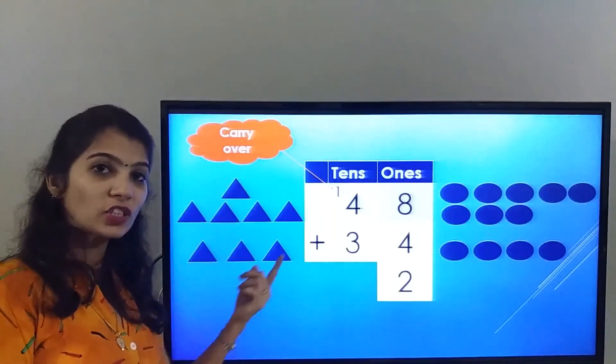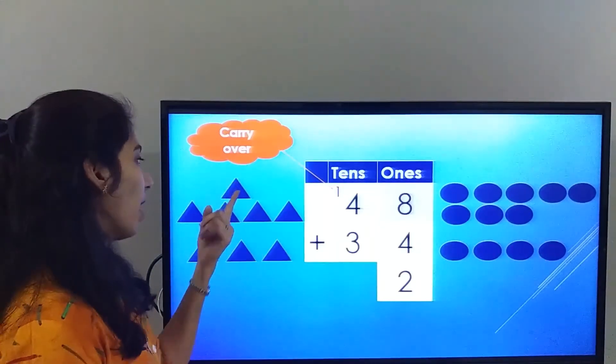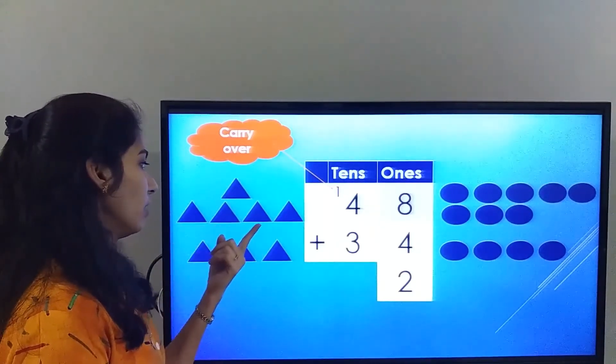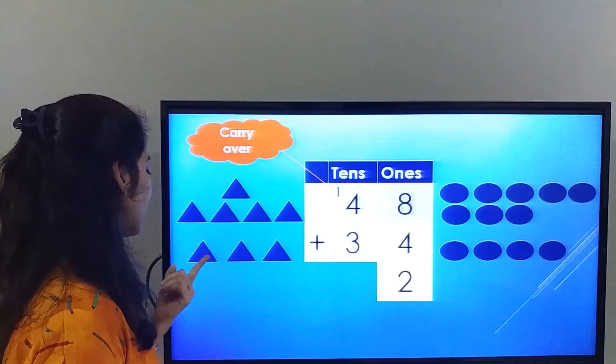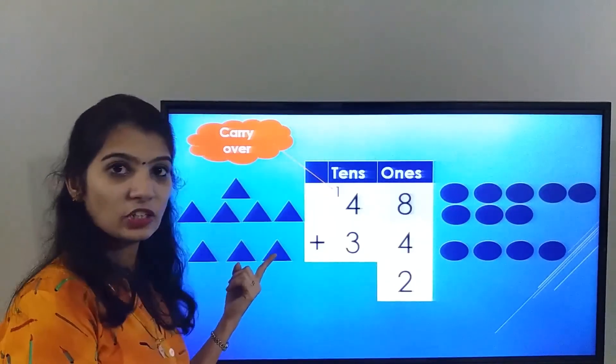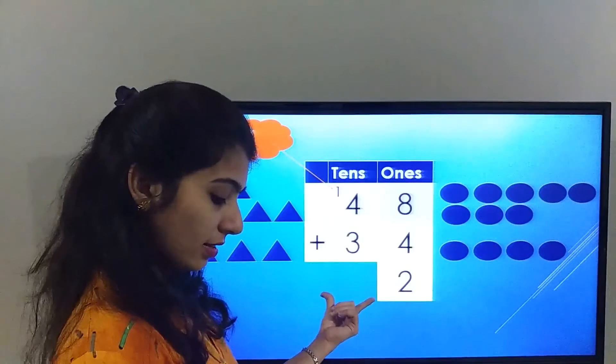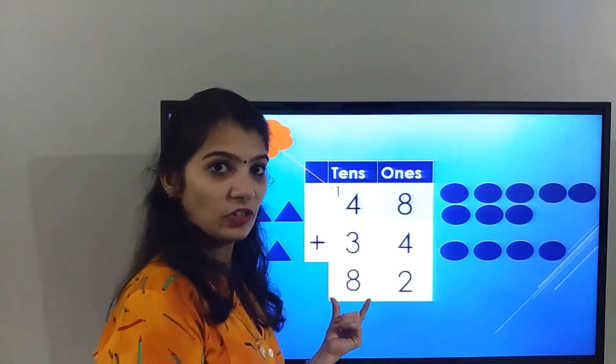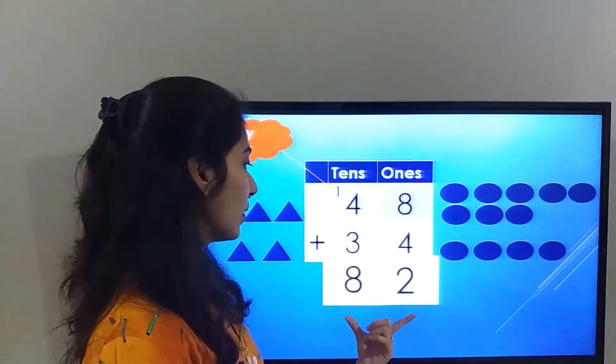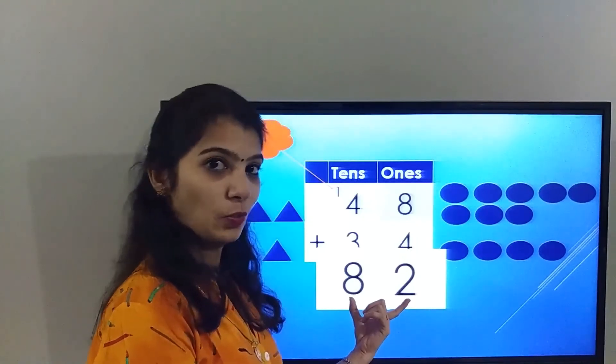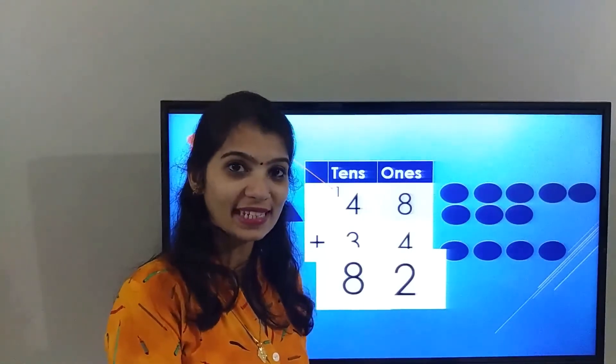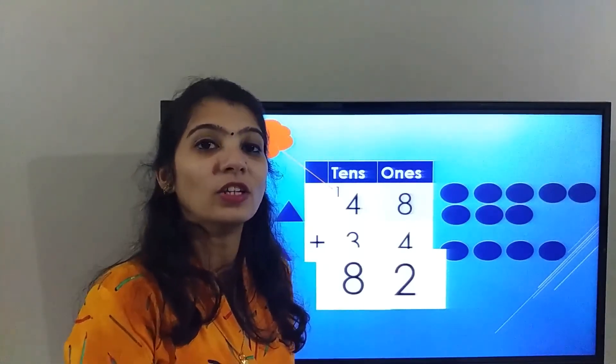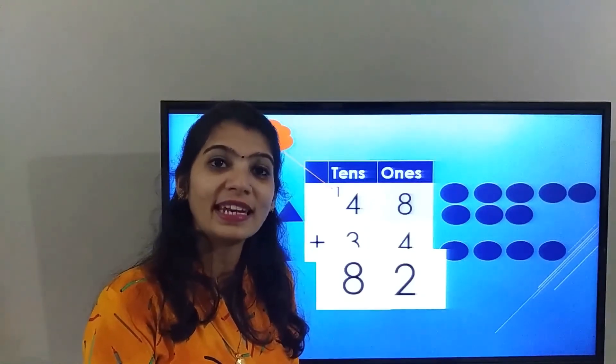Let's count all the triangles together: one, two, three, four, five, six, seven, eight. So the answer in the tens place is 8. The final answer we got is 82. Wasn't that easy?